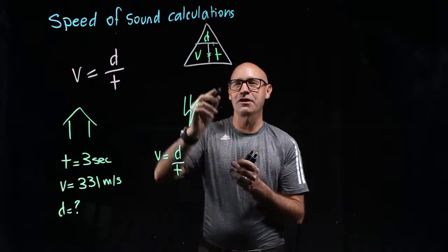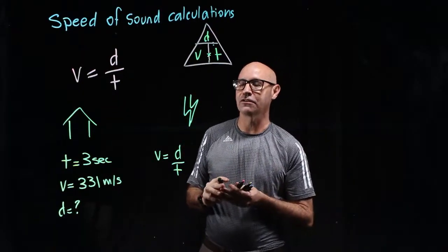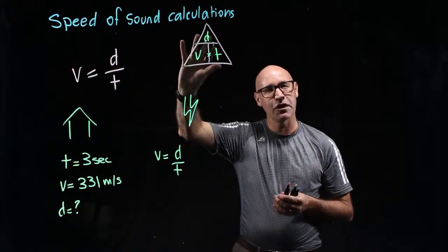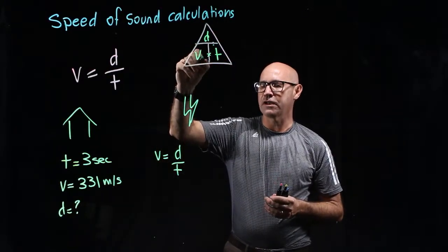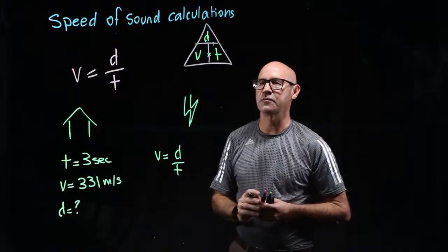One way you might remember it is DVT, like a deep vein thrombosis. You've got to get it the right way around, otherwise it's not going to work. So, we've got our V, D and T in this position like this.